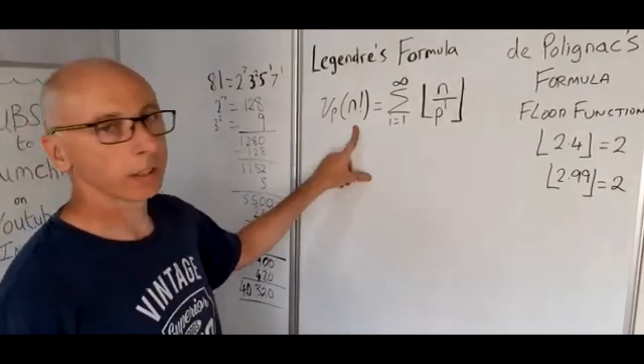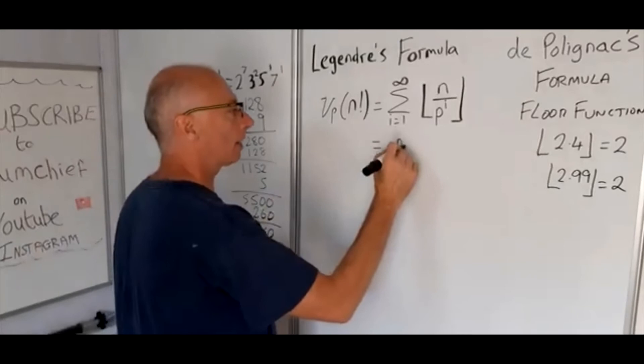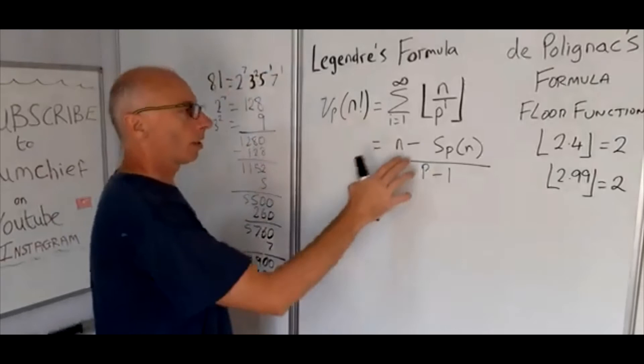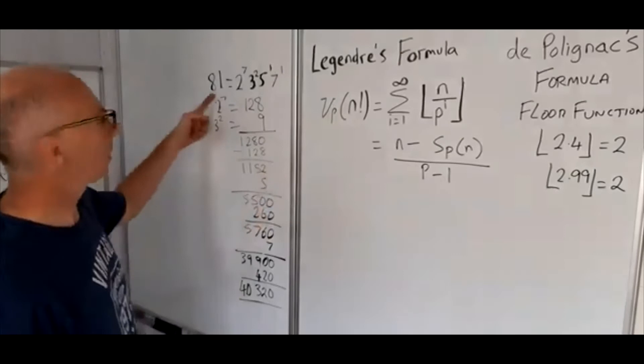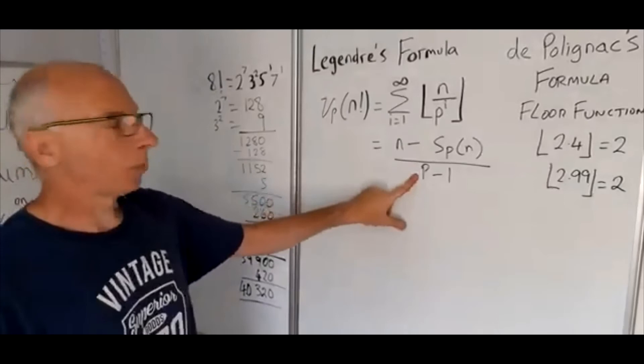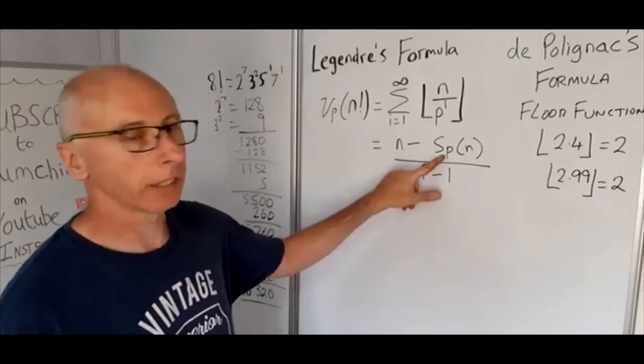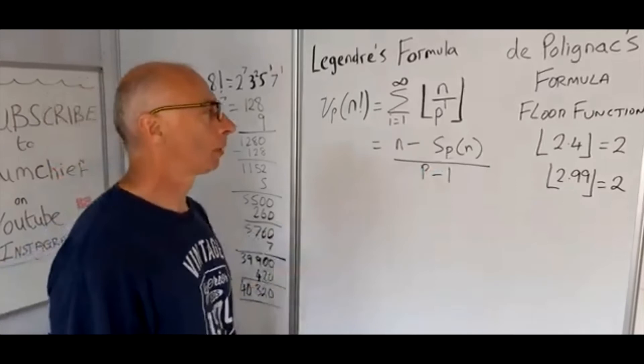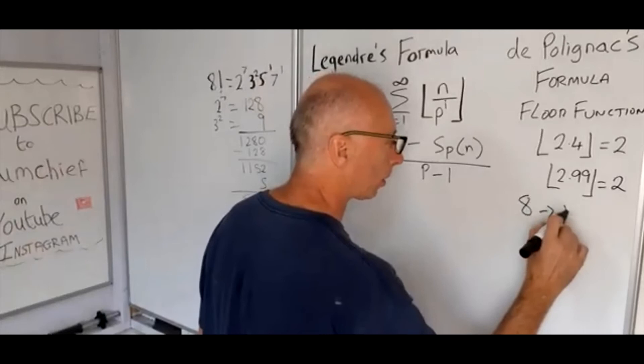So there's an alternative formula for this function here, the p-adic value of n factorial. And what it says is this: n minus S subscript p of n divided by p minus 1. So what does that mean? Well, we know what n is. N is our n factorial, so like in this case here it was 8 factorial. P is the prime number that we're concerned with. And then this one here, S subscript p of n, is basically the sum of the digits of the number n in base p.